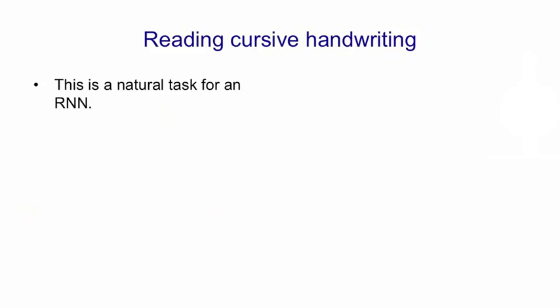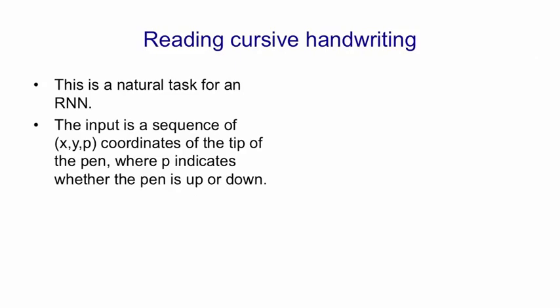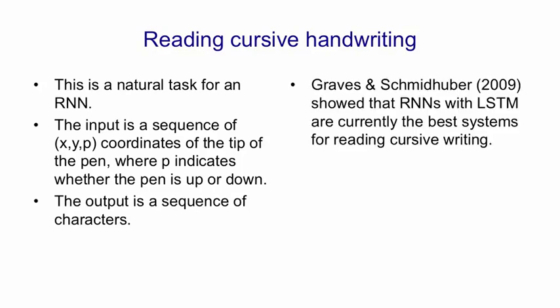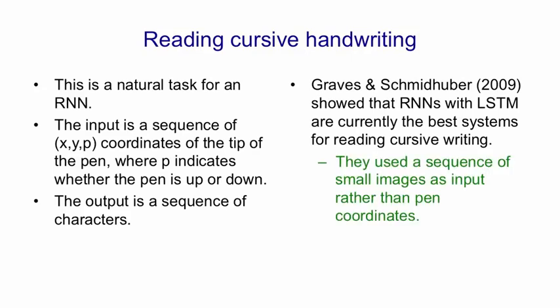Now let's look at a task that a recurrent neural network with long short-term memory is very good at: reading cursive handwriting. The input is just a sequence of the x and y coordinates of the tip of the pen, plus some information about whether the pen is on the paper or not. The output is a sequence of recognised characters. Graves and Schmidthuber in 2009 showed that recurrent neural networks with LSTM are extremely good at this task — they're currently the best systems, and Canada Post is starting to use them. Graves and Schmidthuber also used a sequence of small images as input rather than pen coordinates, so they can deal with optical input where the timing of the pen isn't known.